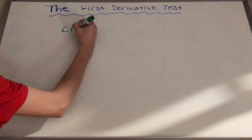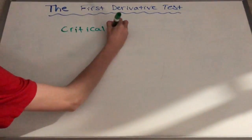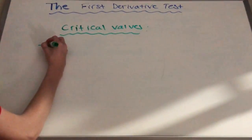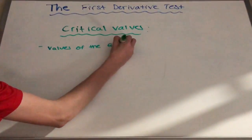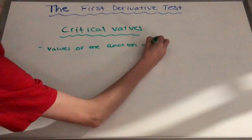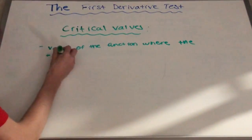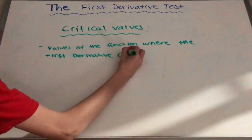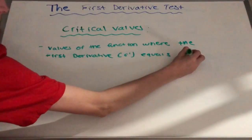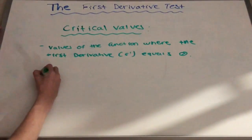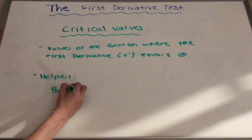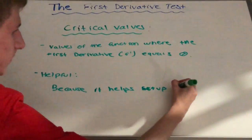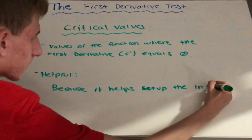The first derivative test also allows you to find critical points of the function. Critical points are values of the function where the derivative equals zero, or a place where the function is constant for a brief period. This is helpful because it will allow us to find intervals of the function that are increasing and decreasing.